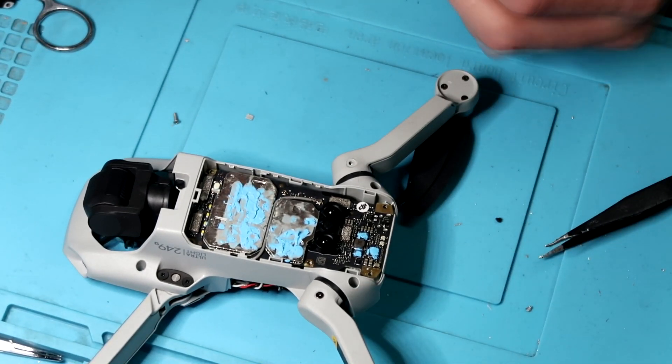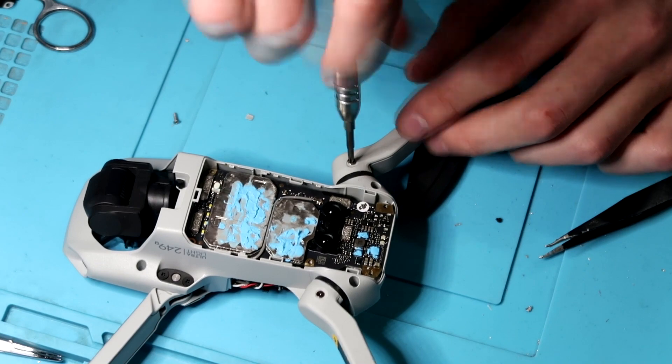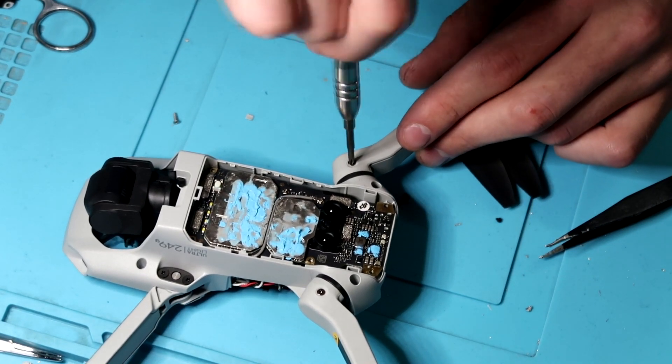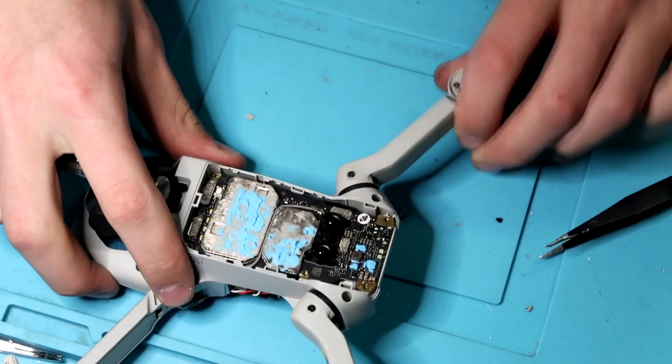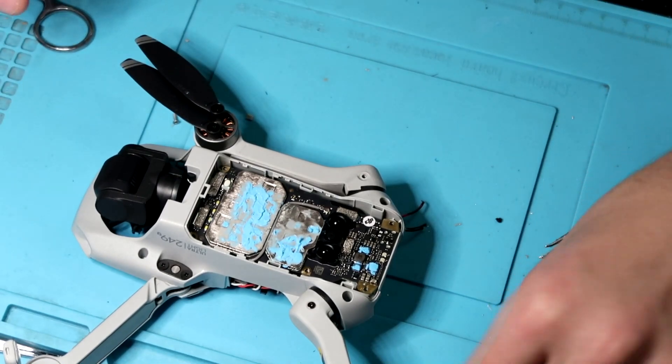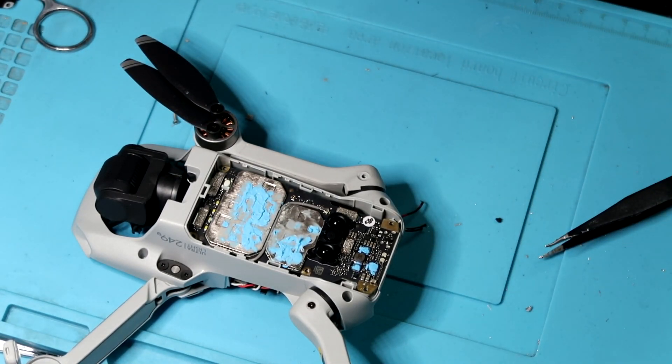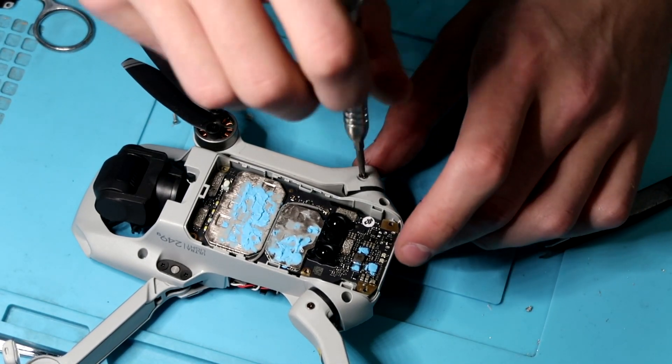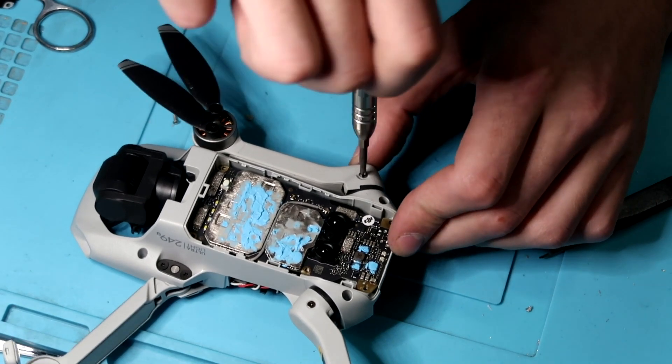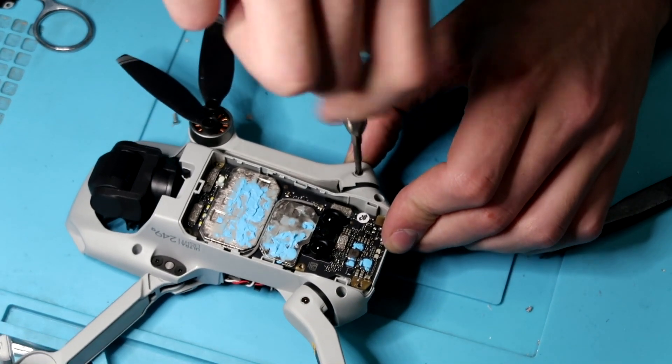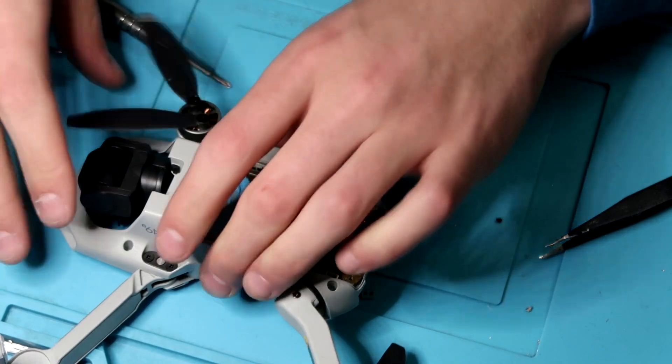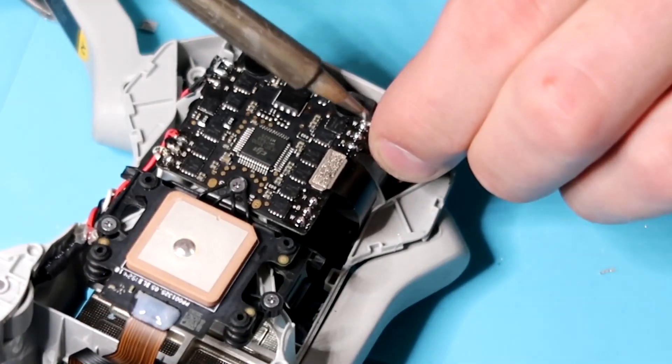Once the arm is seated into the frame, go ahead and grab those screws and make sure this guy doesn't fall out on you. Now that those screws are in there, just make sure the arm is working and now begin to solder those motor wires back onto the board.